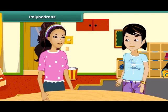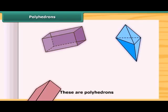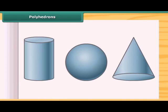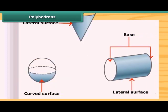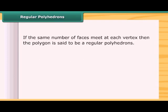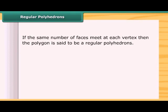Do you know what we call a solid having flat faces, edges, and vertices? Those solids are called polyhedrons. Are these objects polyhedrons? No, these are not polyhedrons — because they do not have flat faces. If the same number of faces meet at each vertex, then the polygon is said to be a regular polyhedron.